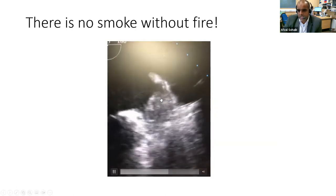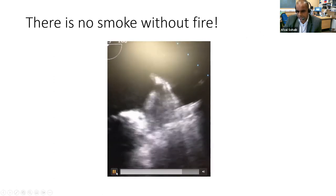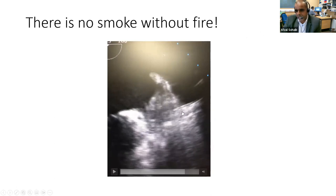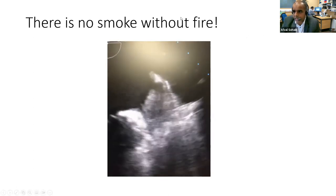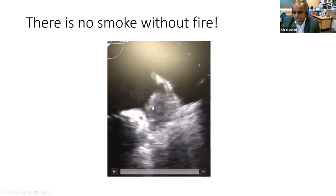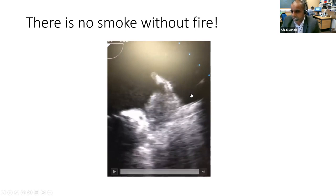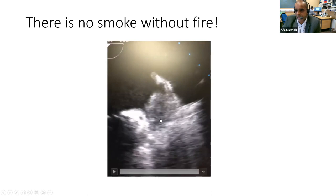Why does AF cause strokes? This video from a transoesophageal echo — which we often do before an AF ablation to look for clots in the heart — shows the patient's left atrial appendage. You can see a clot sitting inside it. If that flew off, it would go into the left ventricle, up the aorta, into the patient's brain and cause a huge stroke. So you need to make sure the patient's given appropriate anticoagulation to ensure something like that melts away.